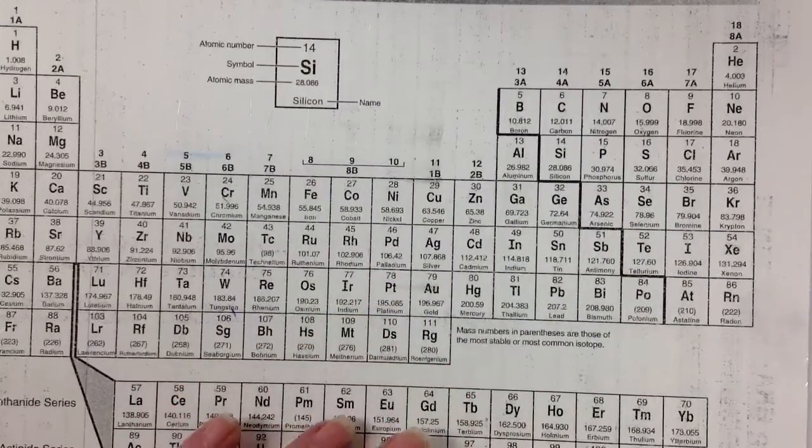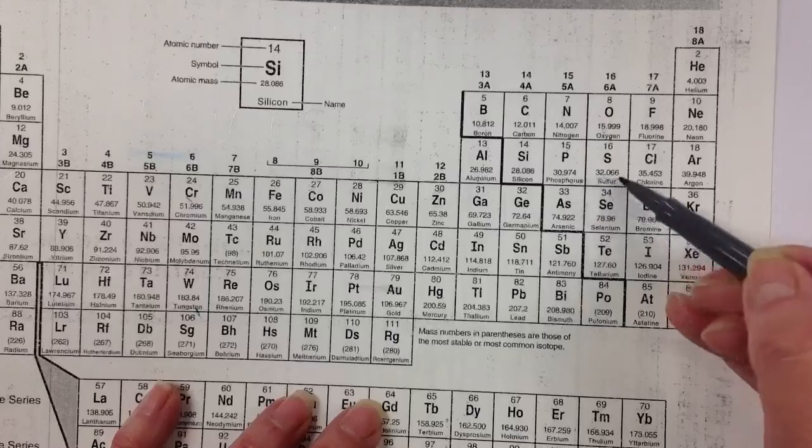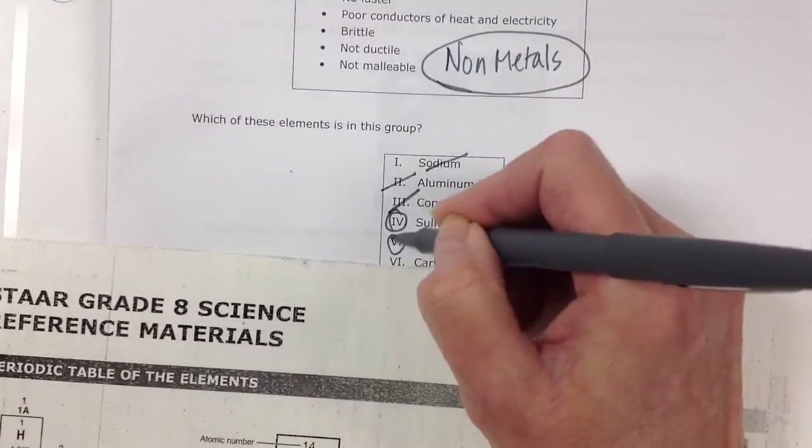Phosphorus. Phosphorus is P. And we see that it's right next to sulfur. So they are also on the right of the stair step, meaning that it, too, is a non-metal.